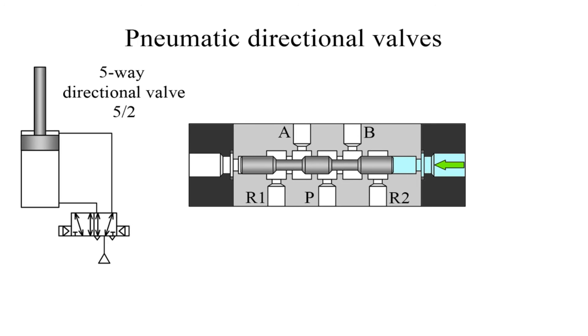When the valve is actuated from the right end, the flow path is from port P to port B and from port A to port R1.